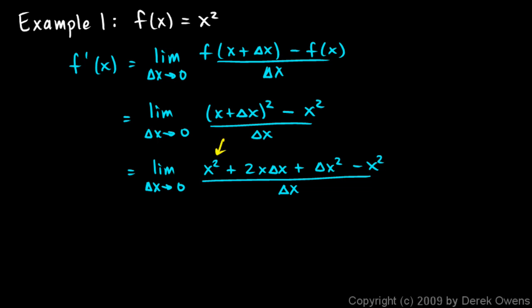Now you notice this x squared here and the minus x squared. Those guys cancel out. So we just have the limit as delta x approaches zero of 2x delta x plus delta x squared over delta x.